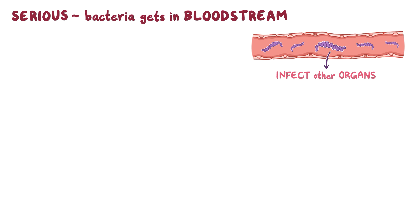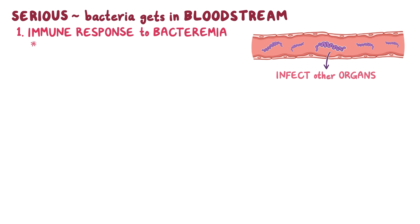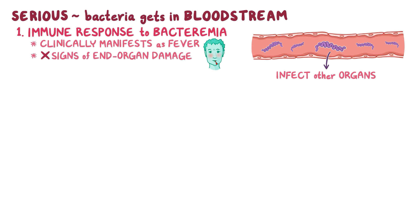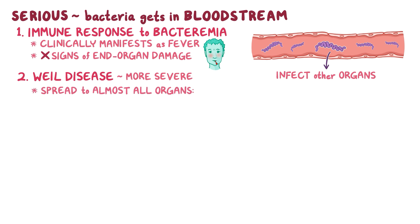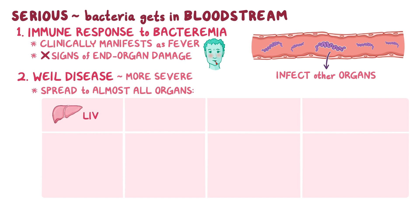Serious problems start when leptospira gets into the bloodstream, where it can move to infect other organs. This typically happens in two stages. In the first stage, there is an immune response to bacteremia, which clinically manifests as fever, but the bacteria are confined to the bloodstream and there are no signs of end-organ damage. In the second stage, also known as Weil's disease, the infection becomes more severe and the bacteria spread to almost all internal organs. Frequently affected organs include the liver, where the bacterial toxins damage liver sinusoids and hepatocytes, causing bilirubin to spill into the bloodstream, which clinically translates as jaundice.